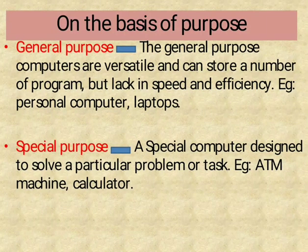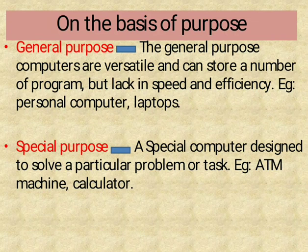On the basis of Purpose: General Purpose and Special Purpose. The general purpose computer can store a number of programs but lacks in speed and efficiency. For example, personal computers and laptops. Special Purpose Computer: a special computer designed to solve a particular problem or task. For example, ATM machines and calculators.